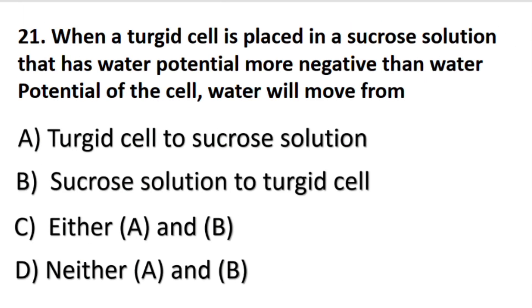When a turgid cell is placed in a sucrose solution that has water potential more negative than the water potential of the cell, water will move from — the answer is A part: turgid cell to sucrose solution.